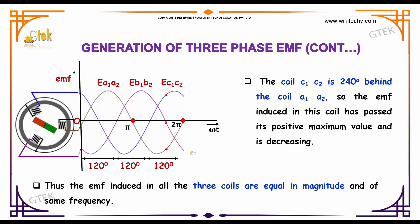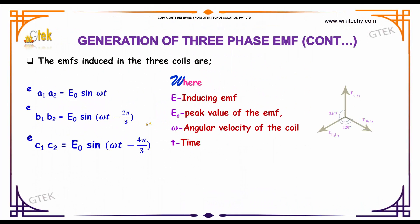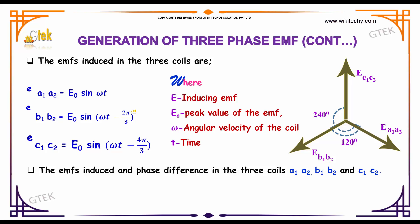Thus the EMF induced in all three coils are equal in magnitude and of same frequency. So the EMF induced in three coils are given by E of A1A2 is E0 sin ωt, whereas for B1B2 is almost 120 degrees, so ωt minus 2π divided by 3.